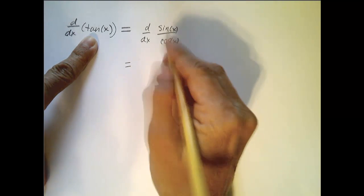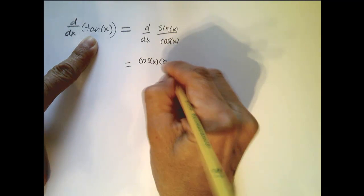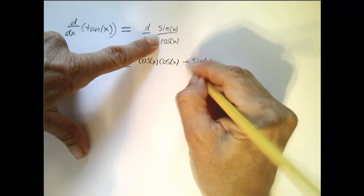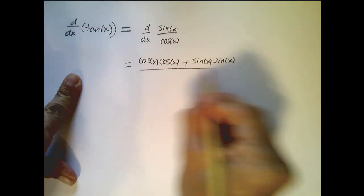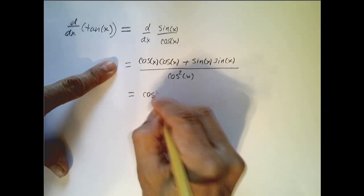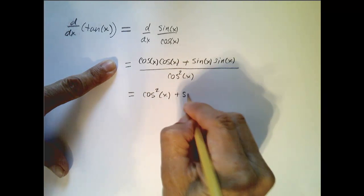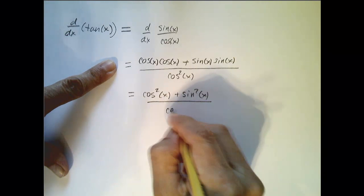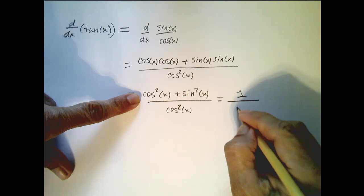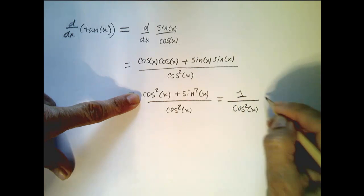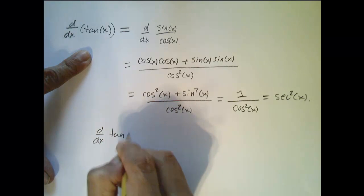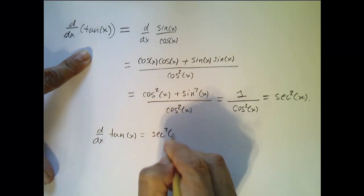That's equal to the derivative of the top, which is cosine, times the bottom, minus the top times the derivative of the bottom, which is negative sine of x — all over the bottom squared. Simplifying the top gives cosine squared of x plus sine squared of x over cosine squared of x. I recognize this as the Pythagorean identity, which simplifies to 1. So we get 1 over cosine squared of x, which is equal to secant squared of x.